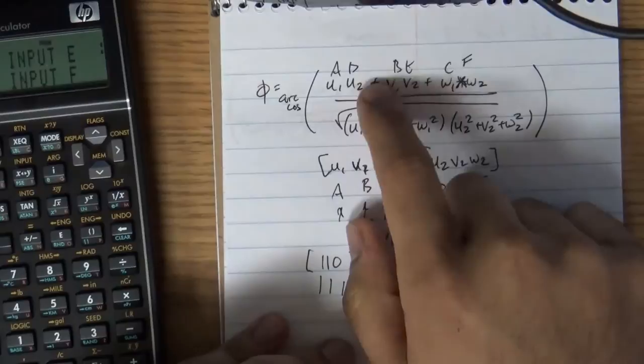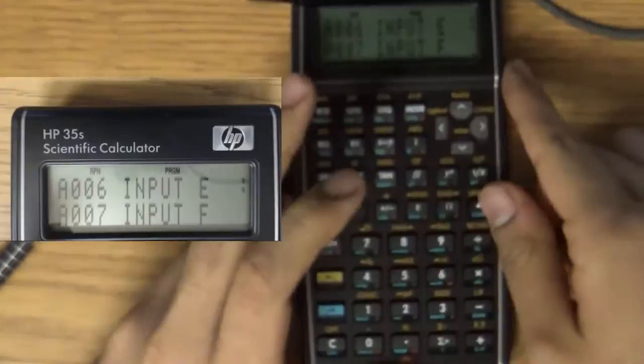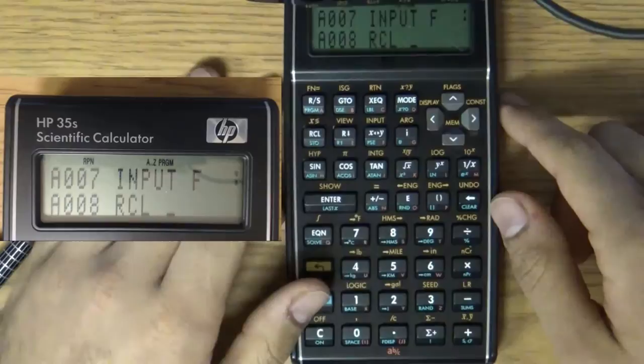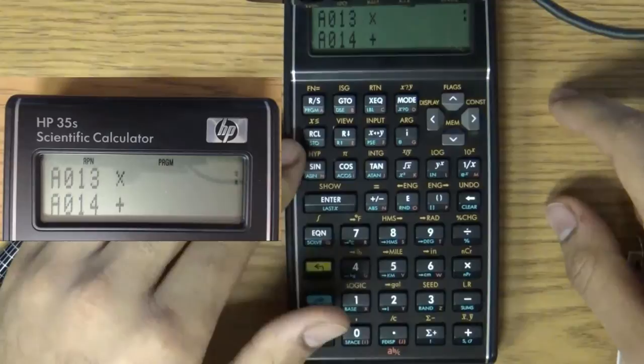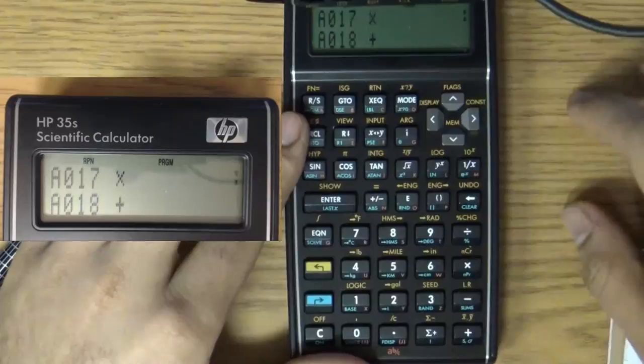The first thing we want to do is multiply A and D together and B and E together and then add them and then C and F and then add that. So, in order to recall a variable from memory, you hit the recall button which is RCL and you recall A and D and we multiply them together and then we recall B and E, multiply those together and then add the products and then recall C and F, multiply them together and add that to the previous two products. Now, we have the numerator.